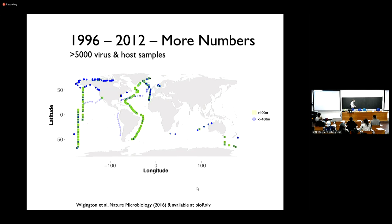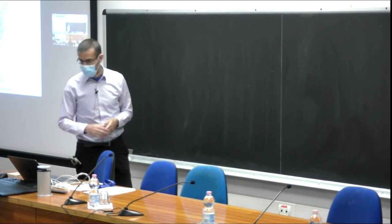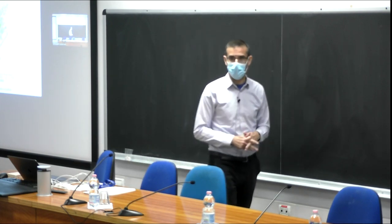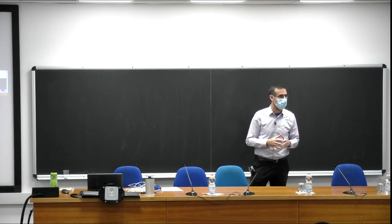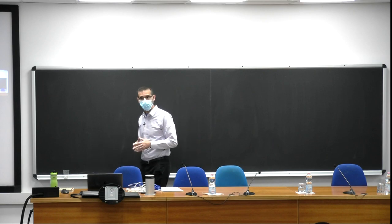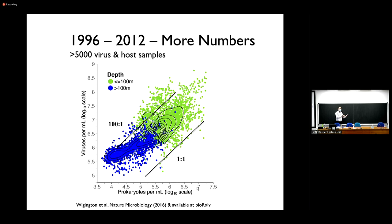My group, along with other groups, went back and revisited virus and host samples taken from marine systems — surface samples in blue and deeper in the ocean below 100 meters in green — and asked how many virus-like particles there are. The answer is there are a lot. You may have heard there are 10 viruses for every microbe in marine systems; that's approximately true, but there's quite a lot of variation — at least 1:1, up to 100:1. Averages are around 10^6 for microbes and 10^7 for viruses.